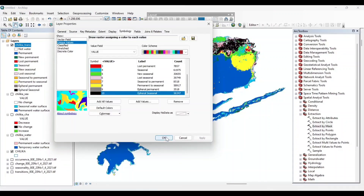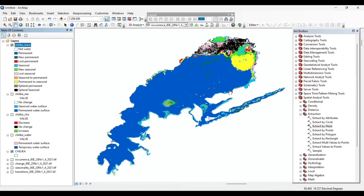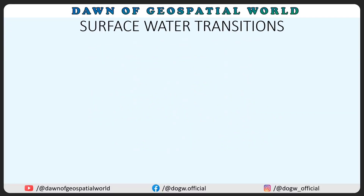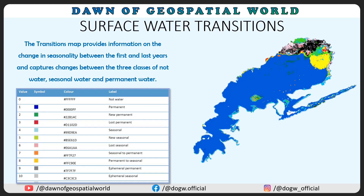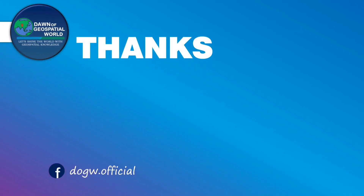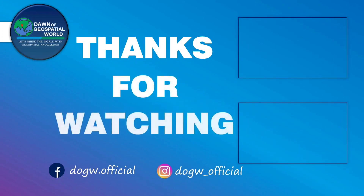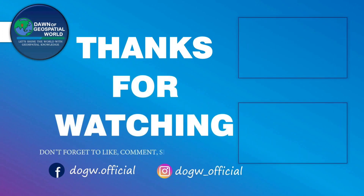Now let's learn about water transitions. The transition map provides information on the change in seasonality between 1984 to 2021 and captures the changes between seasonal water and permanent water. Hope you liked this video — don't forget to like, share, and subscribe.